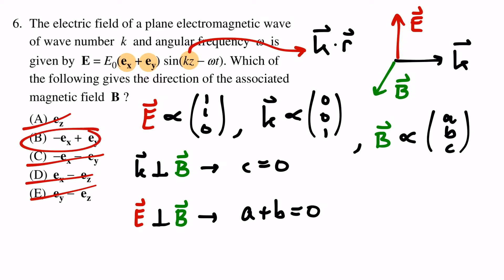This only leaves answer b as the correct one. The important concept in this problem is that in an electromagnetic wave, E, B, and k are orthogonal to each other.